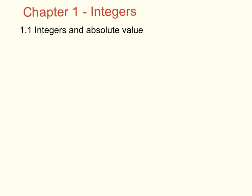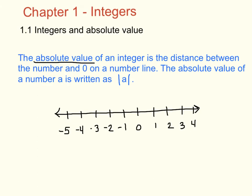In Section 1.1, we're going to talk about integers and absolute value. You should remember that integers are numbers such as negative 3, negative 2, negative 1, 0, 1, 2, 3, and so on. They are whole numbers and their opposites. The other vocab word in Section 1.1 talks about absolute value, which you've also done before. The absolute value of an integer is the distance between the number and 0 on a number line.